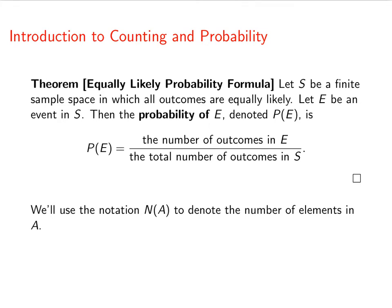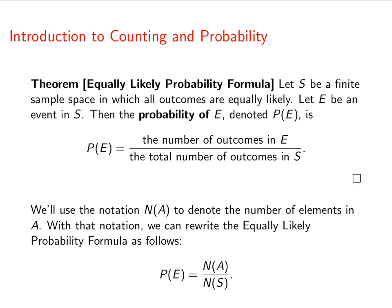We're going to use the notation N of A to denote the number of elements in a set A. So we can rewrite the equally likely probability formula as this: The probability of E is the number of things in E divided by the number of things in S.